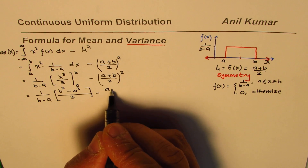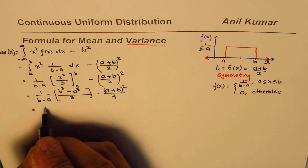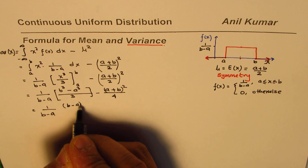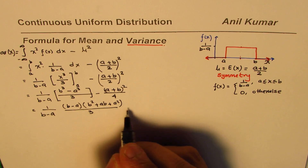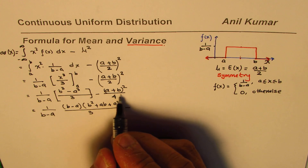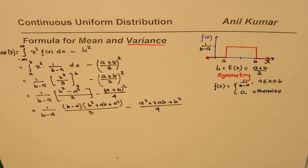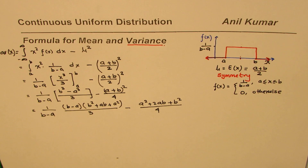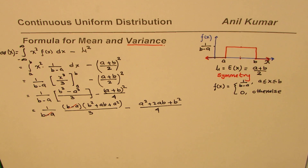So we have 1/(b - a) times (b³ - a³)/3, minus (a + b)² / 4. Now b³ - a³ can be factored as (b - a)(b² + ab + a²), which is a standard formula. After factoring, (b - a) in the numerator cancels with the (b - a) denominator. We also expand (a + b)² as a² + 2ab + b².